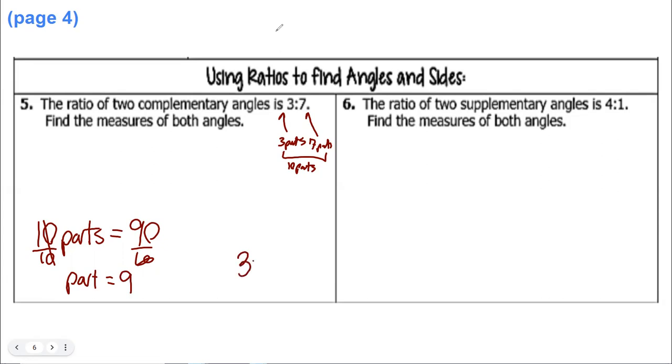Therefore, one of the angles is 9 times 3, that's 27, and the other one is 9 times 7, which should be 63. So one angle is 27 degrees, the other one is 63 degrees. That gives them a 3 to 7 ratio, right?